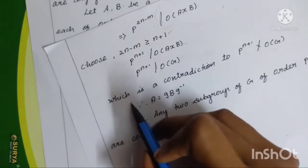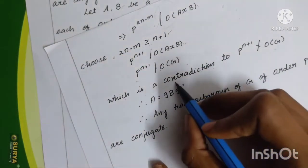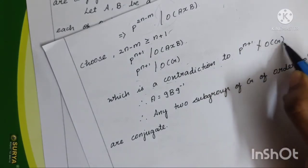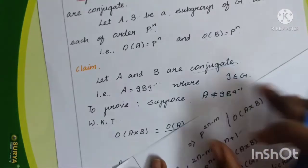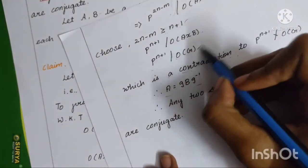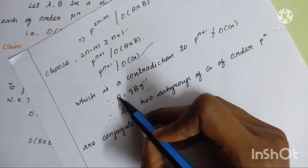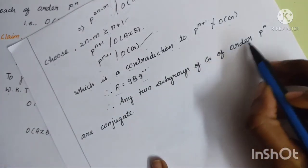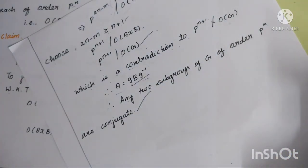But this is a contradiction, because P power n plus 1 does not divide order of G. So we have a contradiction to P power n plus 1 not dividing order of G. Therefore A equals g B g inverse. So any two subgroups of G of order P power n are conjugate. This completes the proof of the second part of Sylow's theorem.